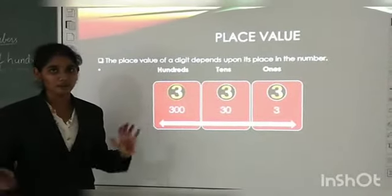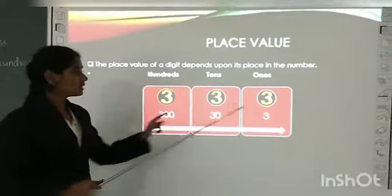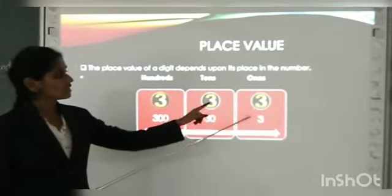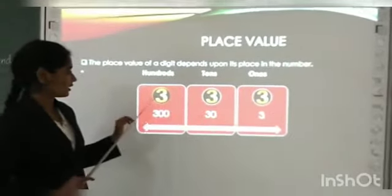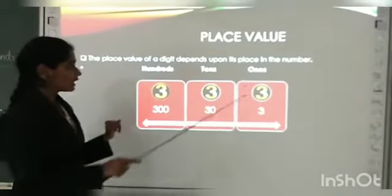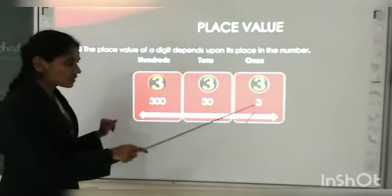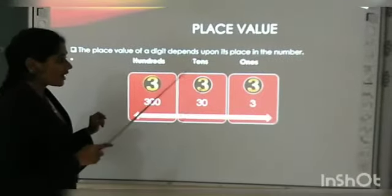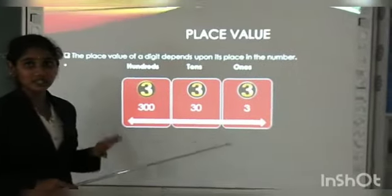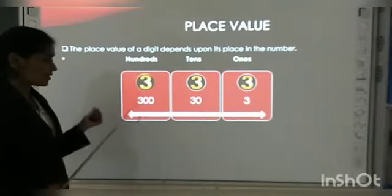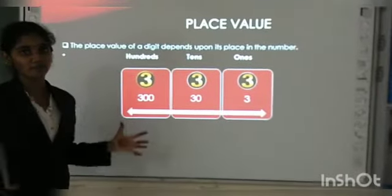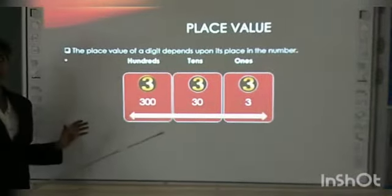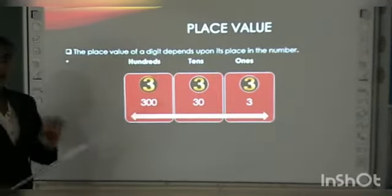See here, the number is three. It is the same anywhere. Three is the same, right? If three is in ones, the value of three is only three. If three is in tens, the value of three becomes thirty. If three is in hundreds place, it becomes more powerful - it is three hundred. Now, what have you learned?